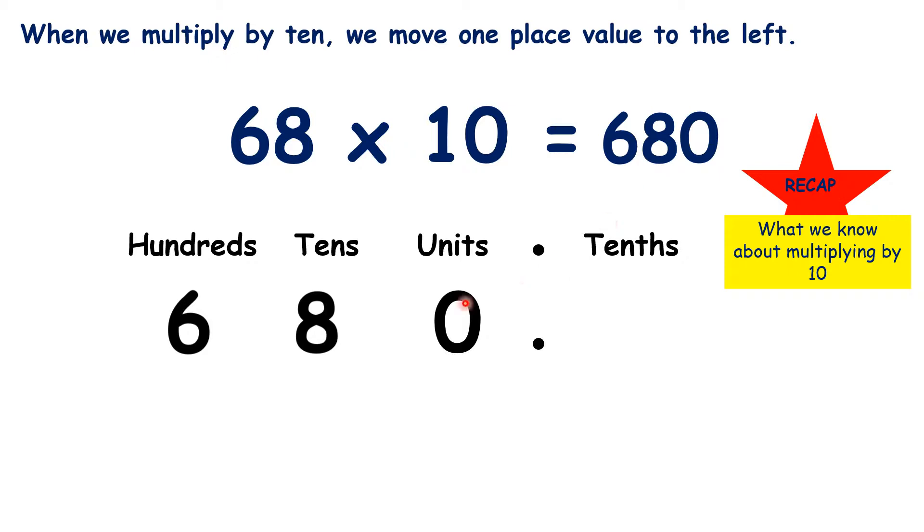And it's important to recognize what we're doing here. We're moving digits to the left. We're not just writing a 0 at the end of the number. This is important because writing a 0 at the end of a decimal number doesn't change the number.